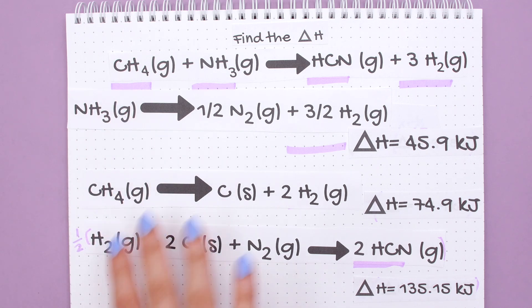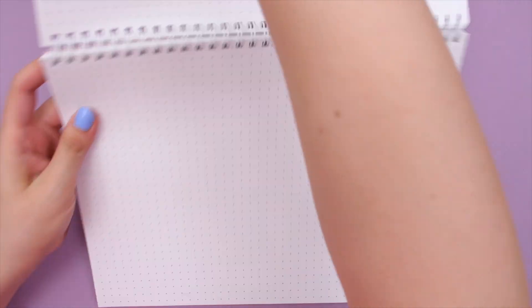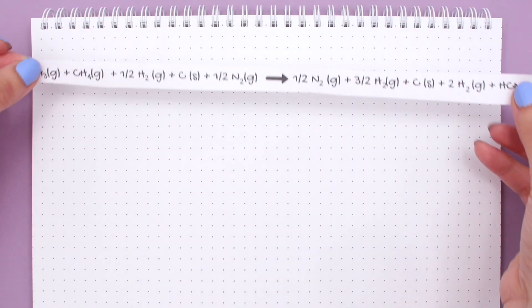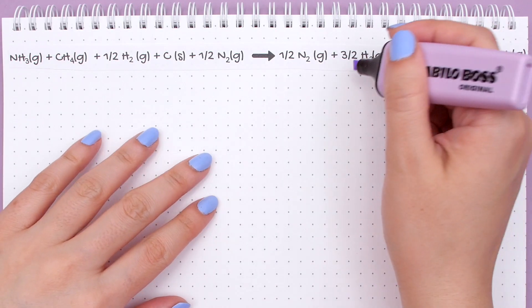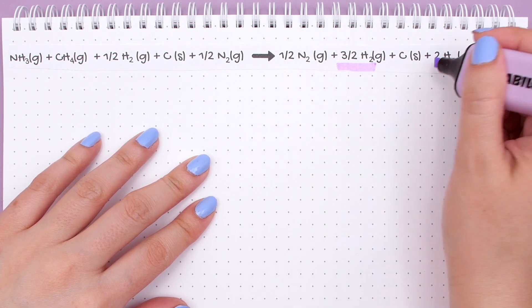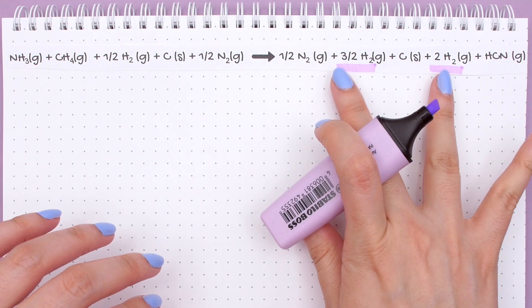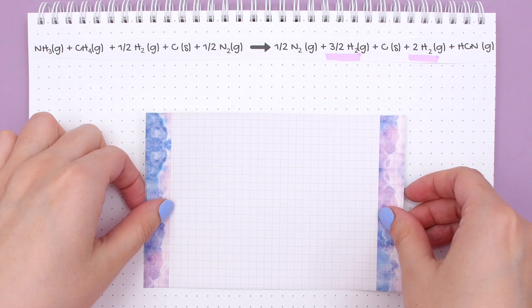By adding all the reactants together and all the products together we get this reaction. Let's check how many H2s we are left with. Looking at the product side, we can add the H2s together since they're like terms on the same side. Let's do this math separately.